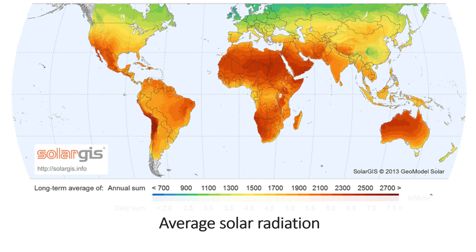Average solar radiation is of course related to how much sunlight hits the surface of the earth. From this map you can see that it is predominantly located in the tropical regions, but it is also quite high in some regions not found in the tropics. That is of course related to altitude, which has an important impact on the availability of solar radiation.